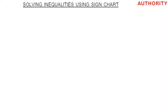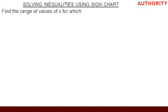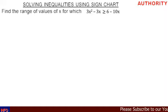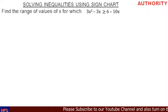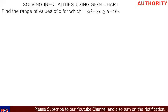Welcome. Today let's take this question: find the range of values of x for which 3x squared minus 3x is greater than or equal to 6 minus 10x. We need to find the range of values of x for which 3x squared minus 3x is greater than or equal to 6 minus 10x.